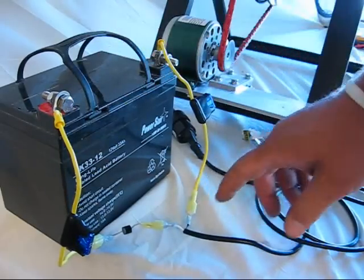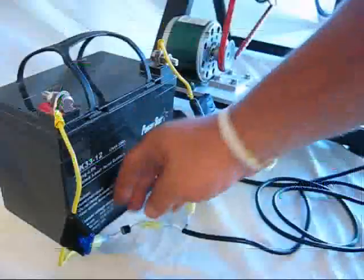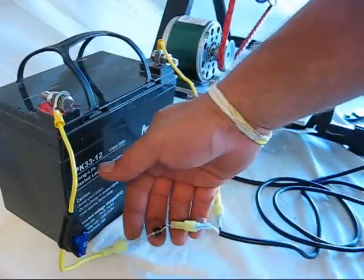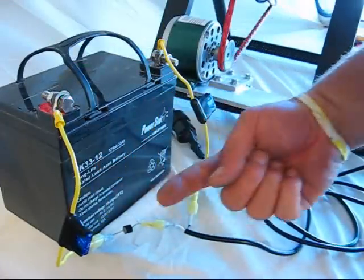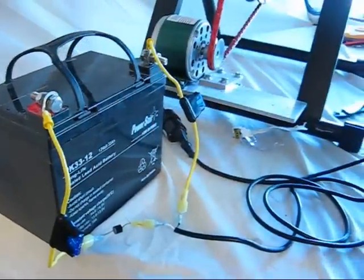However, when we get enough voltage from the generator to cause the current to flow from the generator positive line up into the battery, this diode will let that voltage through, will let that current through in this direction, but not in that direction. So let's go ahead and try it out and see.